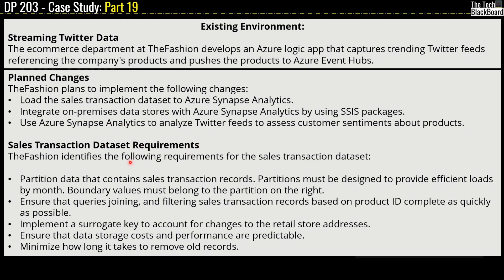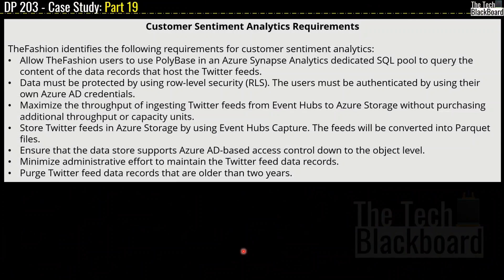The sales transaction dataset requirements are: partition data containing sales transaction records, with partitions designed to provide efficient loads by month and boundary values belonging to the partition on the right; ensure queries joining and filtering sales transaction records based on product ID complete as quickly as possible; implement a surrogate key to account for changes to retail store addresses; ensure data storage cost and performance are predictable; and minimize how long it takes to remove old records.